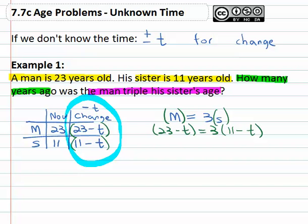Notice again the importance of the parenthesis because now as we solve, the first step is going to be to distribute through the parenthesis. We have twenty-three minus t equals thirty-three minus three t.